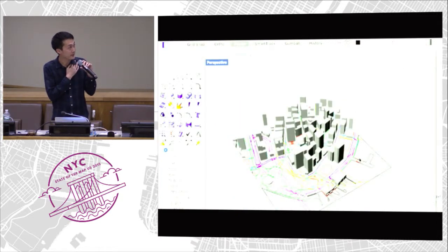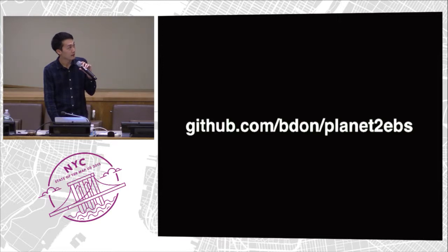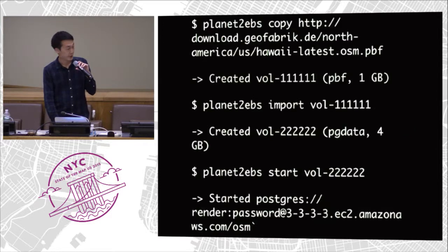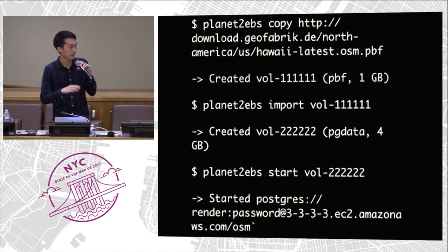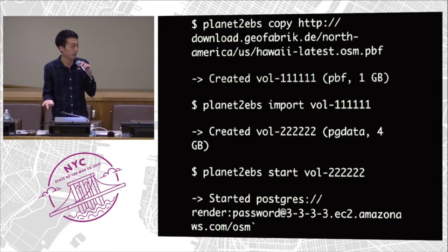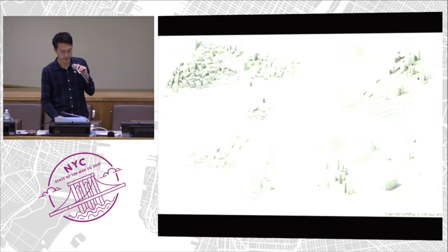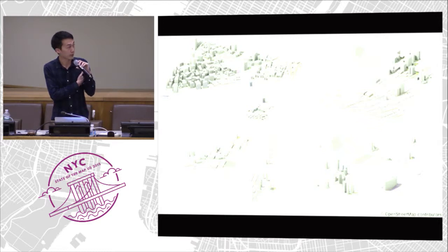I'll take a quick aside and talk about the technical aspects of this implementation. I built some open source tools. One is something I call Planet to EBS, which makes it really easy to use a full Planet file on Amazon EC2. It's a command line tool built with Boto and Fabric that runs from your host machine — with one command it turns an OSM PBF file into an EBS volume, and with another command it turns that into a running EC2 database with Postgres that you can render from. Another technical aspect is doing the mesh generation for the CAD files and ray-tracing it on the server side, so I can give people a nice preview of what their CAD file looks like directly on the website, even for corporate users without a WebGL-enabled browser.